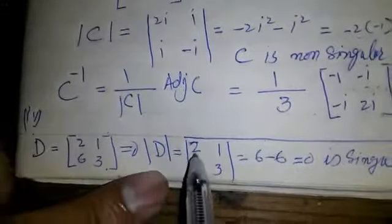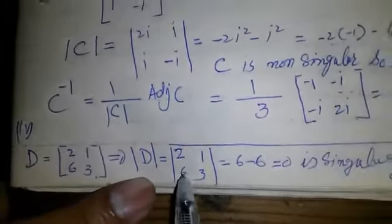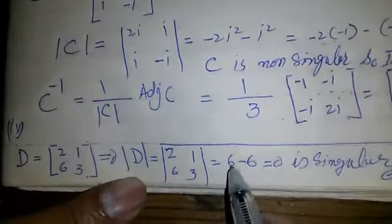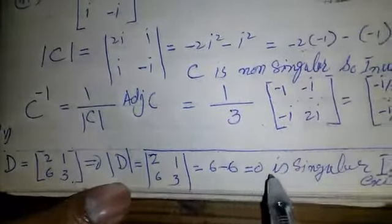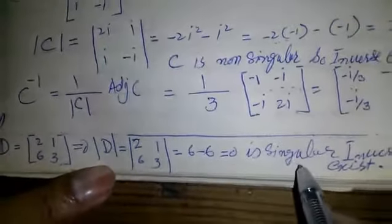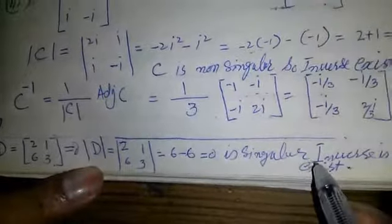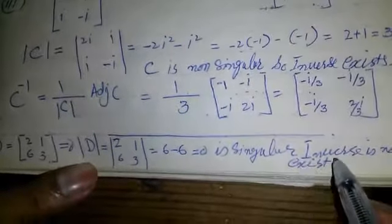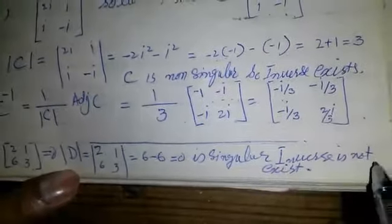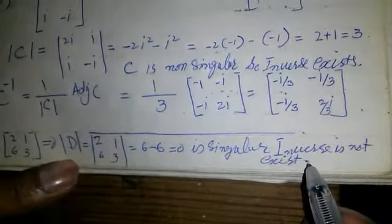Part 4: D = [[2, 3], [2, 1], [6, 3]]. The determinant of D is equal to (2)(3) minus (1)(6) = 6 - 6 = 0. It is a singular matrix, so its inverse does not exist.